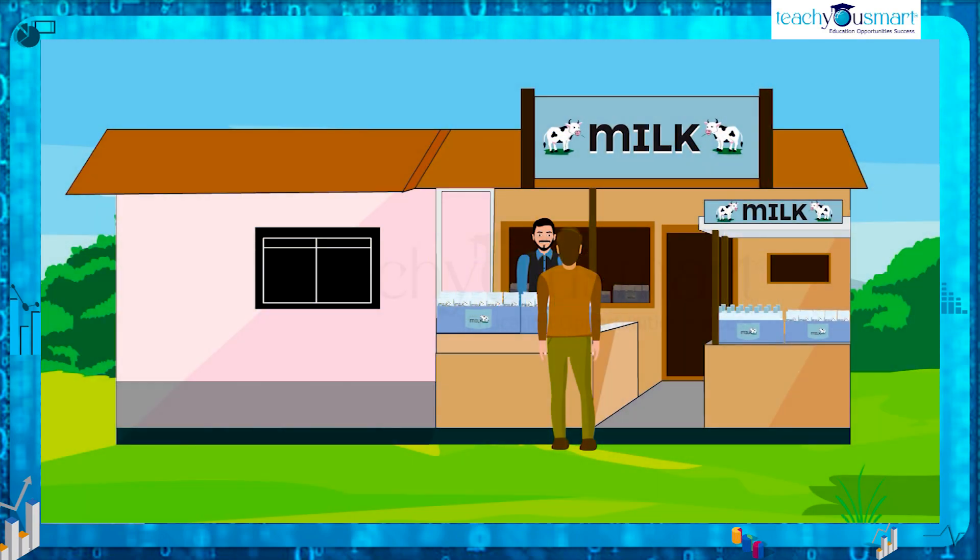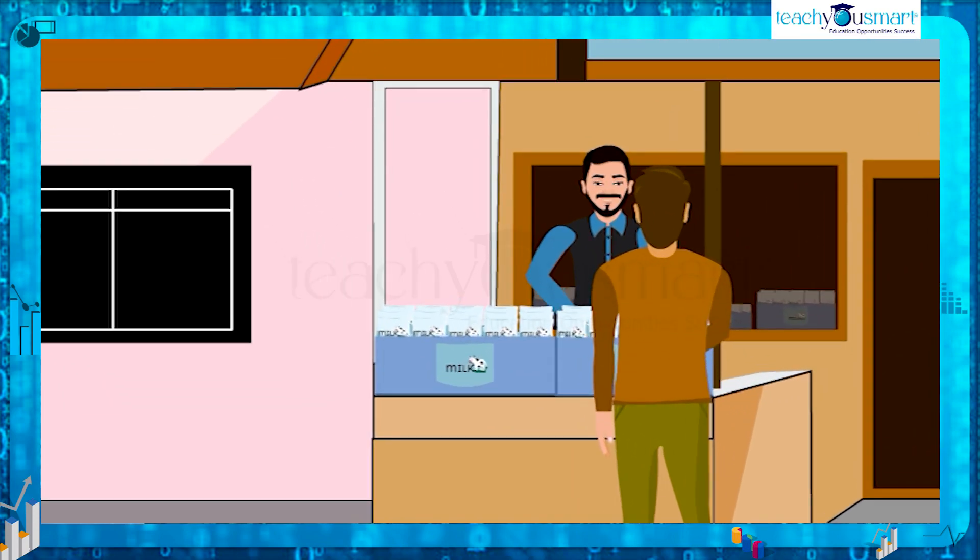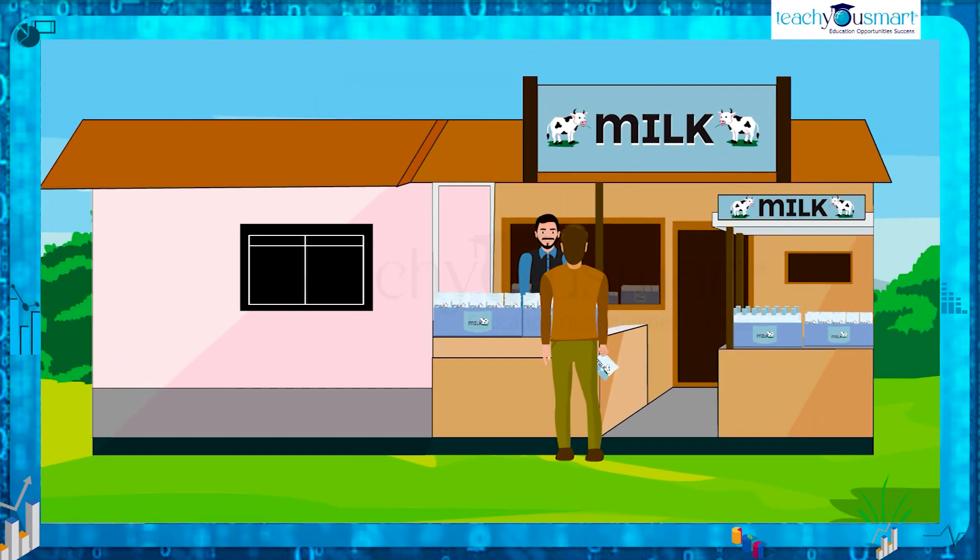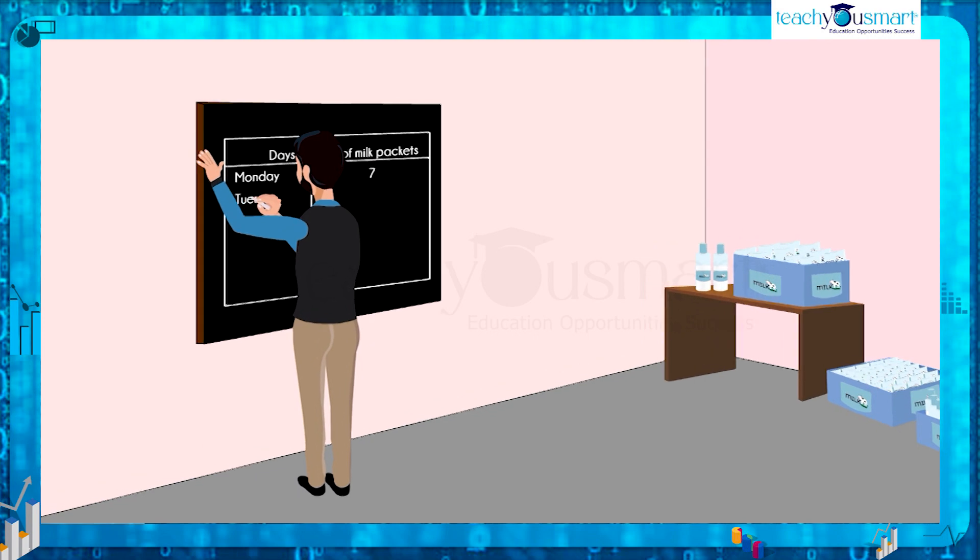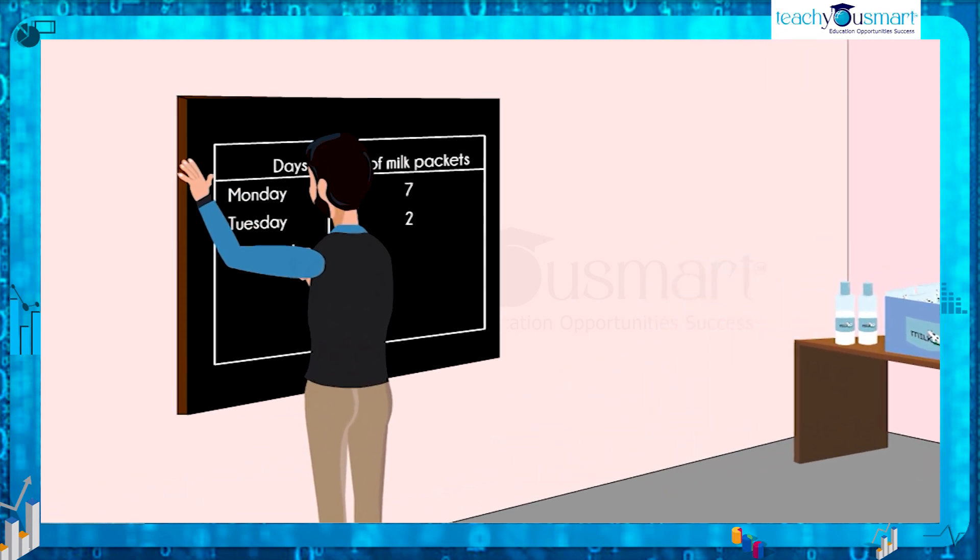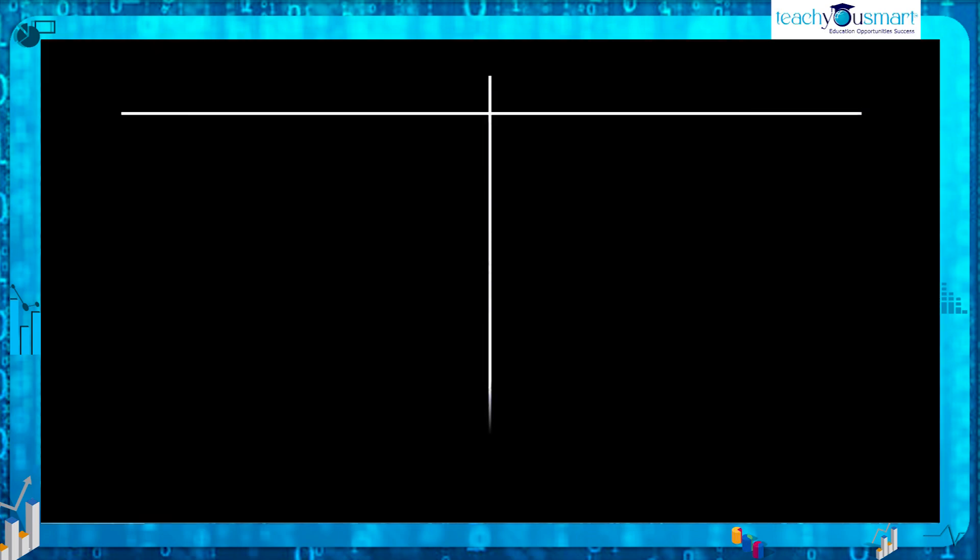Here we can see that a shopkeeper is selling milk packets from his shop. Every Saturday he calculates the number of milk packets sold from Monday to Friday. Last Saturday he calculated the number of milk packets sold and marked it on a chart.